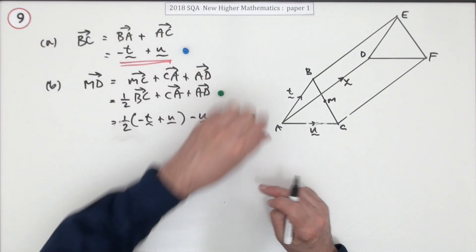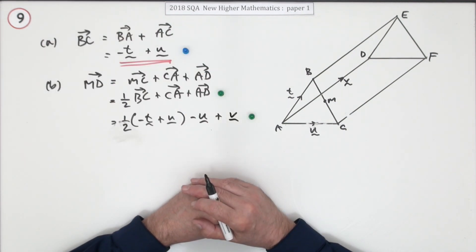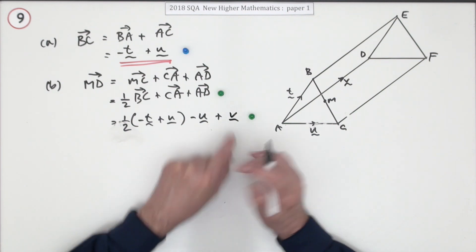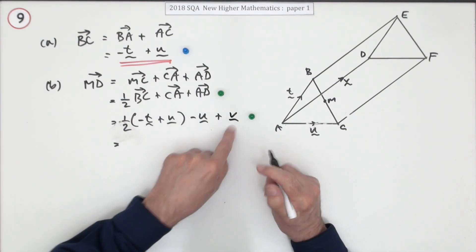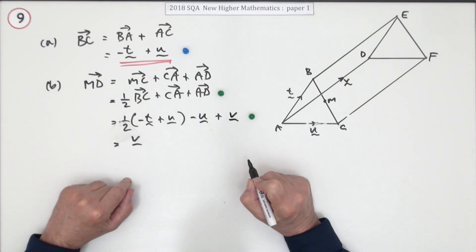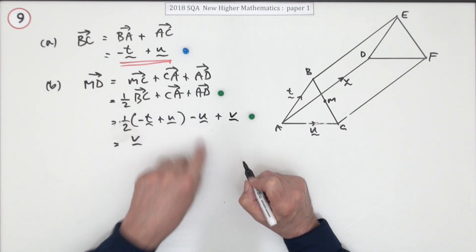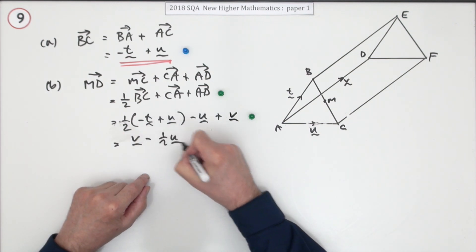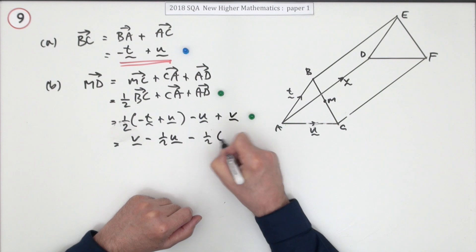Now, in fact, doing that gets you the last mark. It's not asking you to tidy it up. I think I will tidy it up because V's on its own as a positive. U, there's a half but take away one. So it's minus a half U and it's also minus a half T.